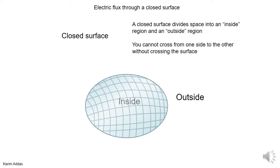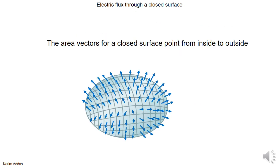Let's look more closely at the electric flux through a closed surface. A closed surface separates space into two parts — an inside and an outside — and you can't go from one side to the other without hitting the surface at some point. It completely seals a region. We said that the area vectors by definition have to point from inside to outside, and these are some of the representative area vectors for this particular shape.